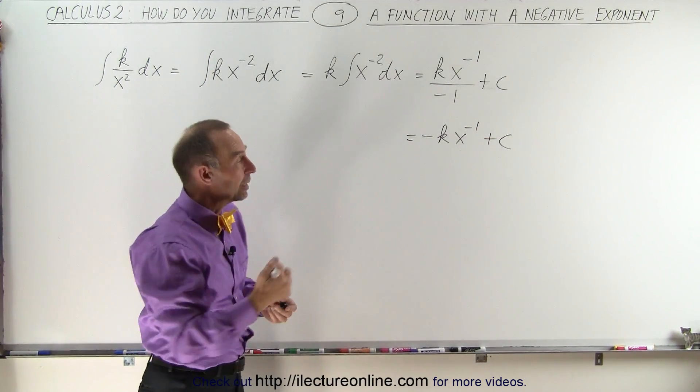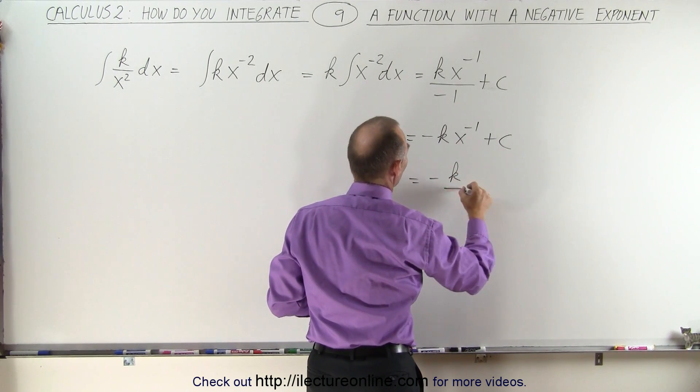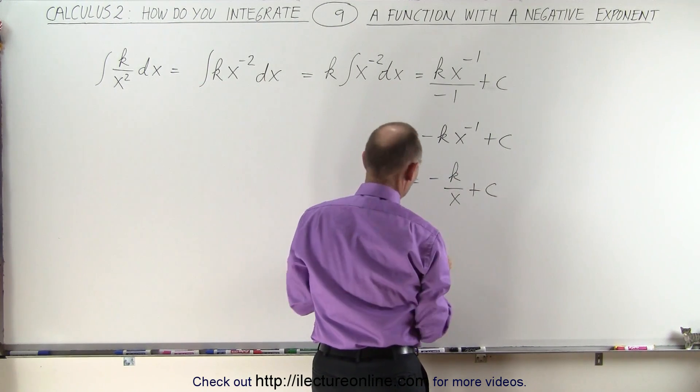And then typically we take the x and put it back in the denominator. And this can be written as minus k over x plus a constant of integration.